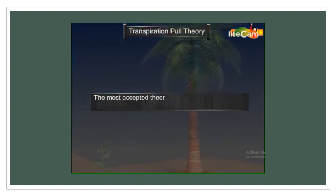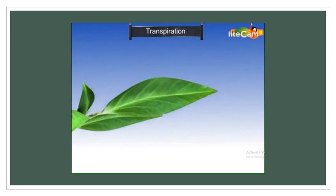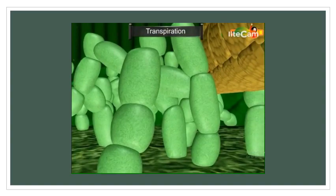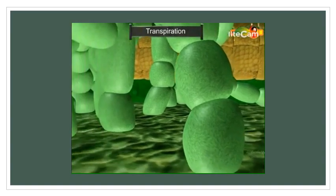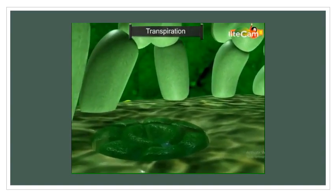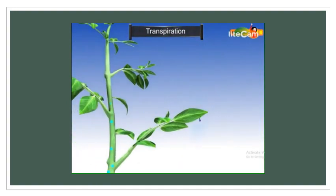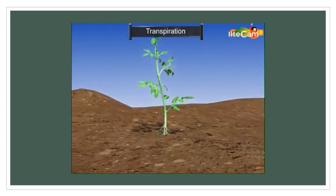The most accepted theory that explains ascent of sap in all types of plants is transpiration pull theory. The leaves lose water and indirectly generate a pulling force or tension for the water in the mesophyll cells of the leaves. This force is called the transpiration pull. Eventually, due to transpiration pull, the amount of water lost by plants during transpiration is replenished by an equal amount of water that is absorbed by the roots and transported up to the stem.